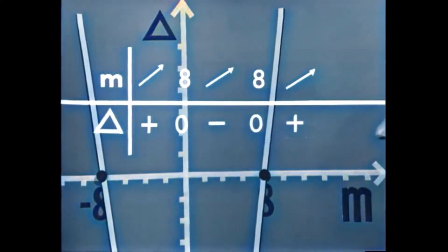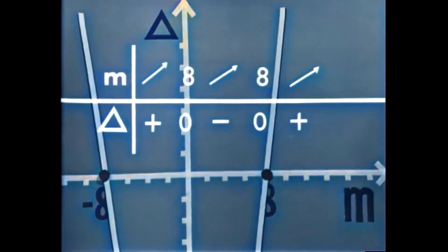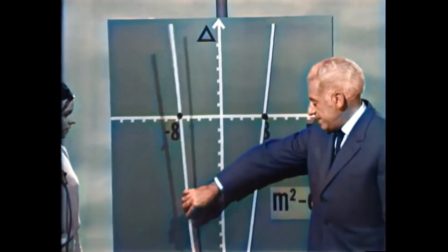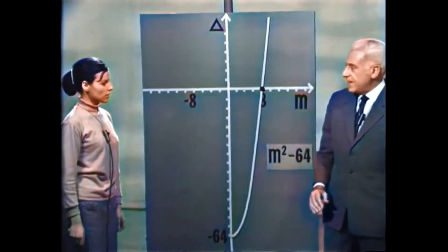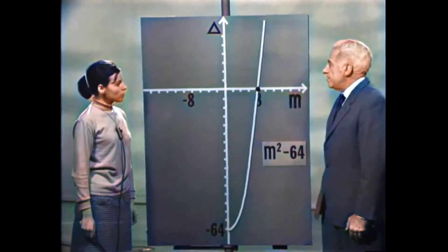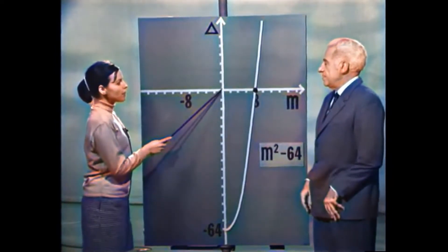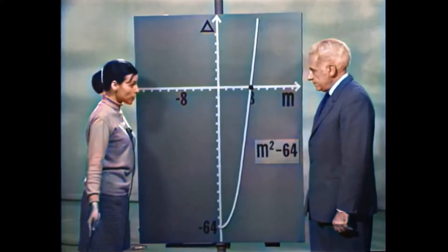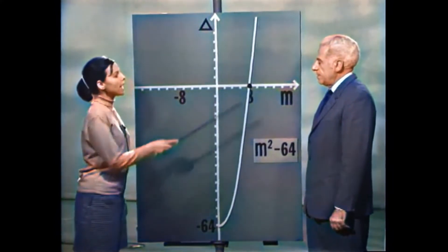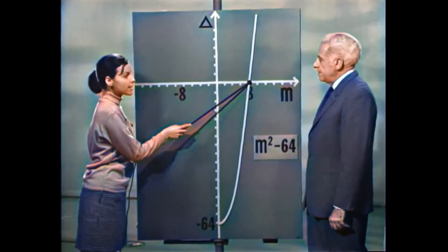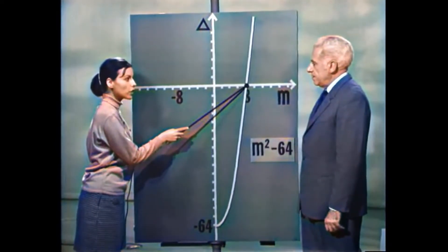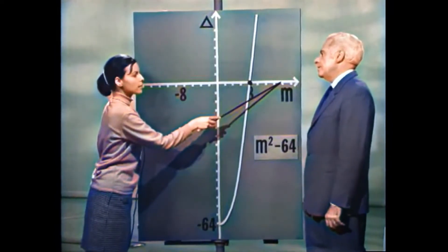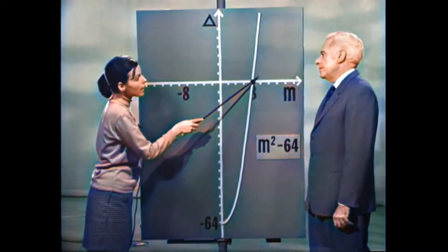אבל M הוא מחצית אורך הגדר, ולכן M לא יכול להיות שלילי — נוציא את החלק השמאלי של הפרבולה. לכן: אם M קטן מ-8, הדיסקרימיננטה שלילית — אין פתרון. אם M שווה ל-8, הדיסקרימיננטה אפס — פתרון אחד. אם M גדול מ-8, הדיסקרימיננטה חיובית — שני פתרונות.